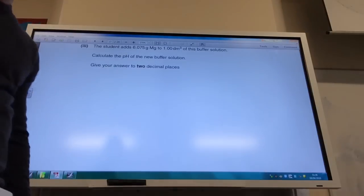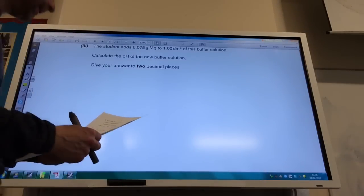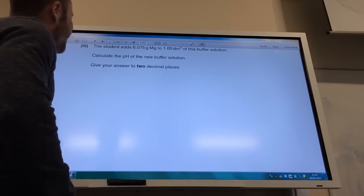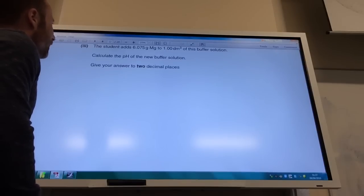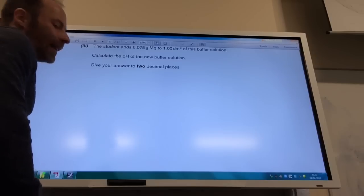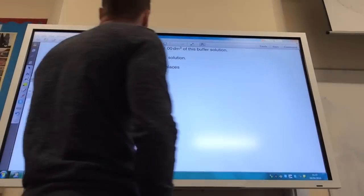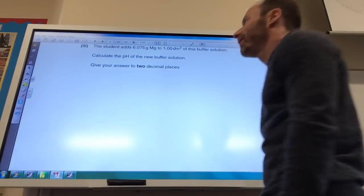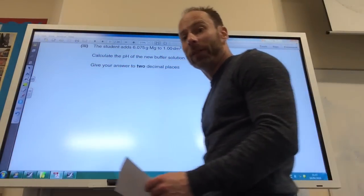Right, so time for a big buffer calculation. A student adds 6.075 grams of magnesium to one decimeter cubed of this buffer solution. Calculate the pH of the new buffer solution, giving your answer to two decimal places. So here we go.